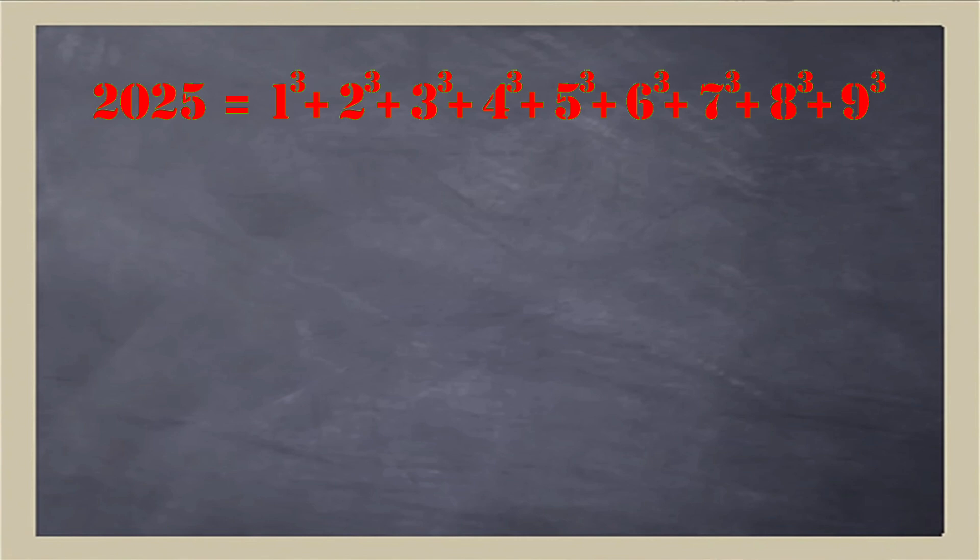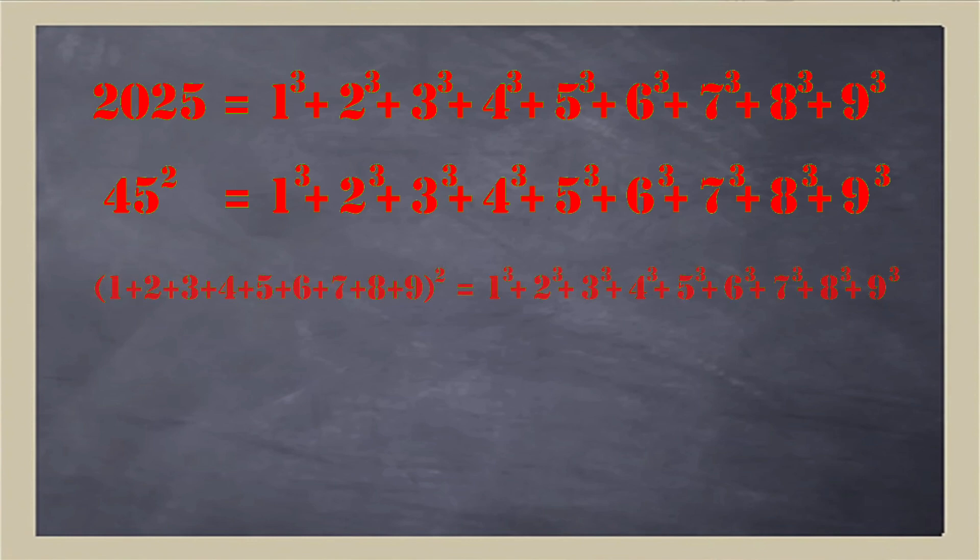Now this result about 2025 only works because it's the square of a triangular number, 45. And 45 is a triangular number, the ninth triangular number, because it's the sum of the first nine whole numbers. So the result we're looking at is that the ninth triangular number squared is the sum of the first nine cubes. A result which holds for all triangular numbers.